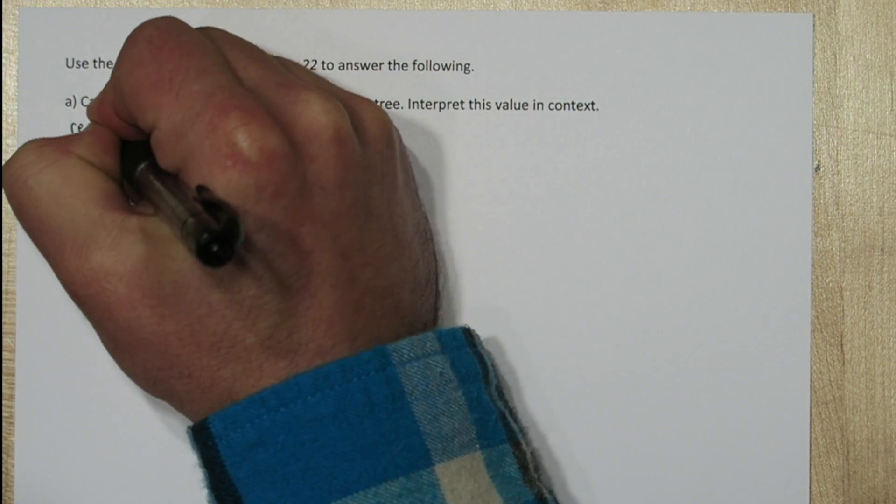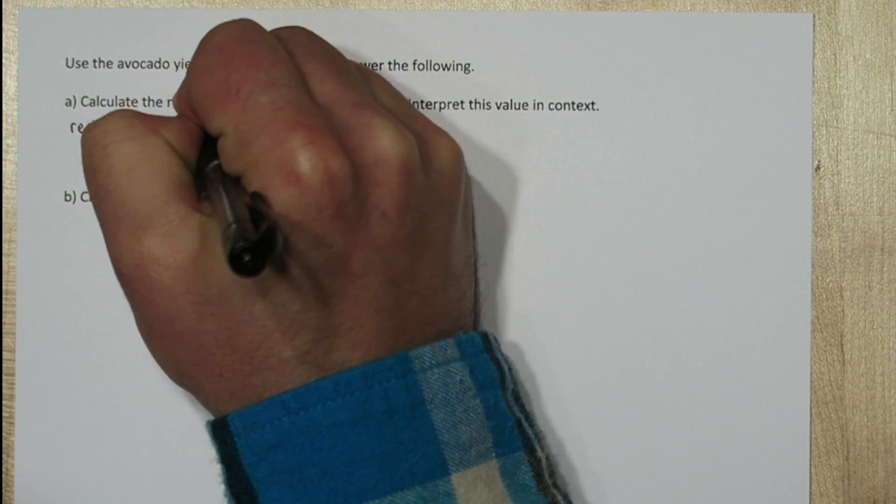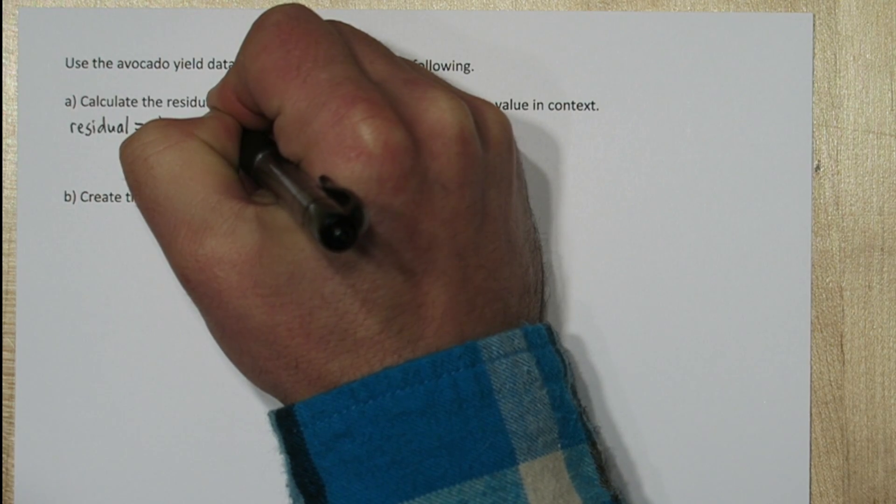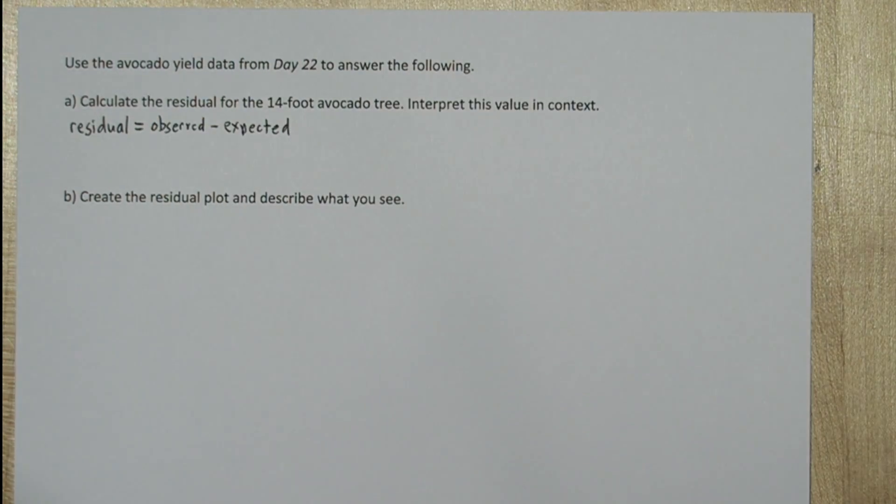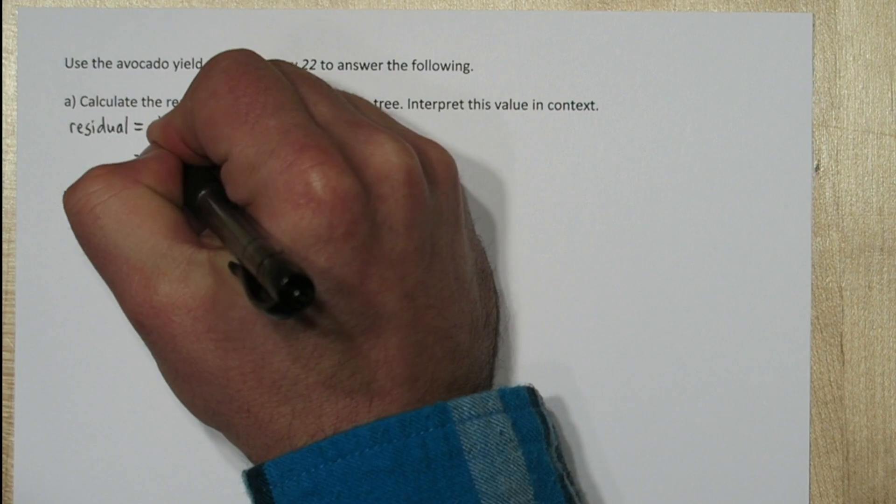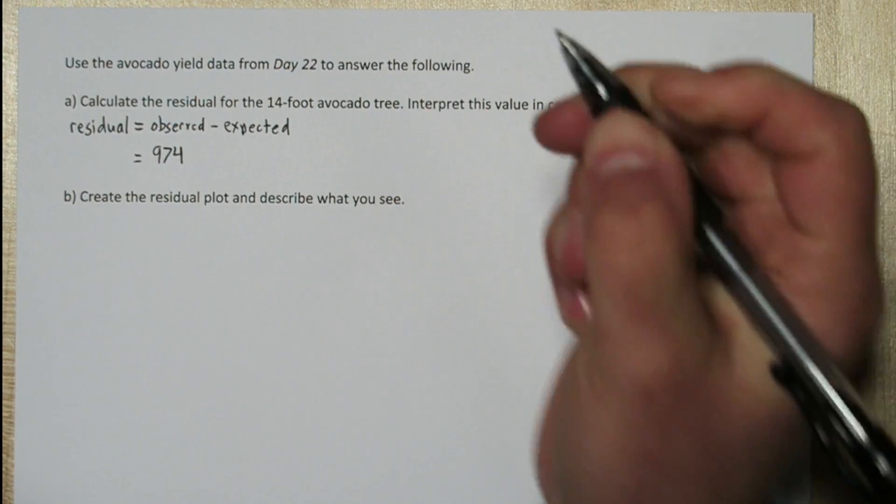So a residual is our observed value minus what we'd expect, our predicted value. So from the day 22 problem, the tree that was 14 feet tall had an avocado yield of 974.